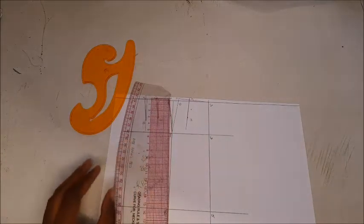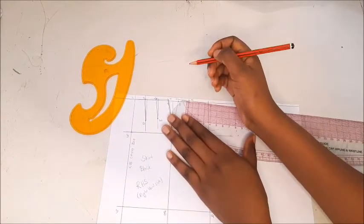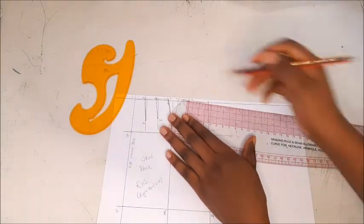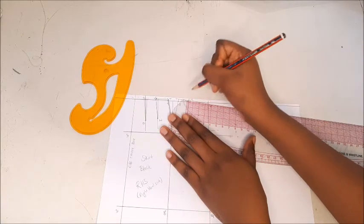Our dart is 2.5 centimeters wide, and so you have to distribute it evenly on that line and then add your dart lines or dart legs, joining those two lines to the dart points that we drew earlier on.